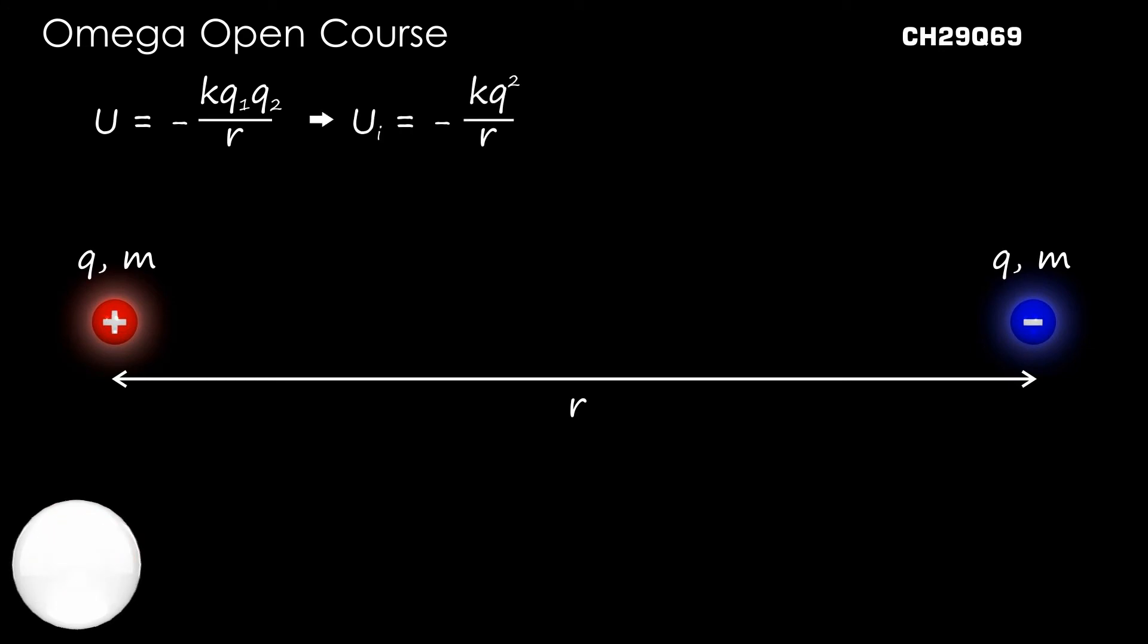Let us denote the magnitude of charges on both particles by Q, their mass by M, and the initial separation by R. The potential energy of two charges at distance R is given by K·Q1·Q2/R. Thus, the initial potential energy of the system is -KQ²/R.